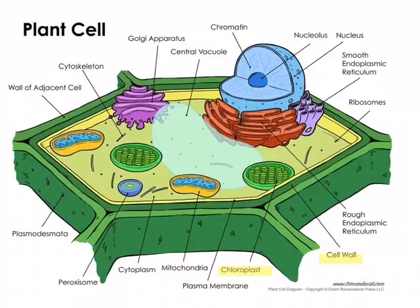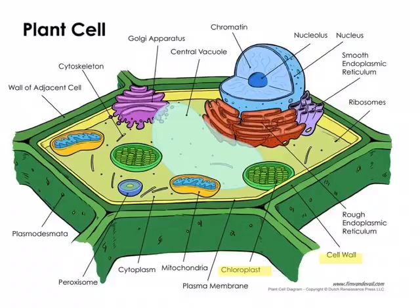Otherwise, the plant cell has all the same things that the animal cell would have. You can see the nucleus here, the ER. There is also a very large vacuole, because plant cells can't just go get a drink of water whenever they want, so they have to be able to store water.